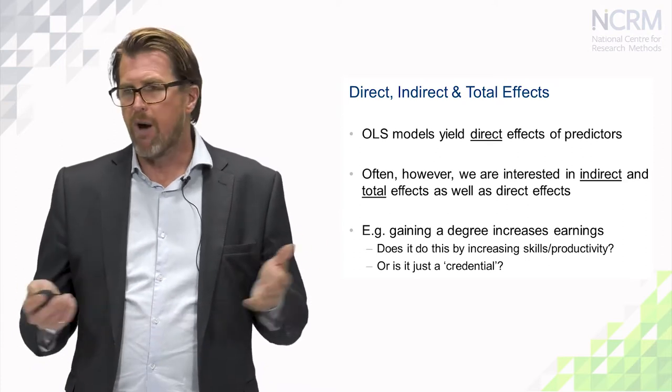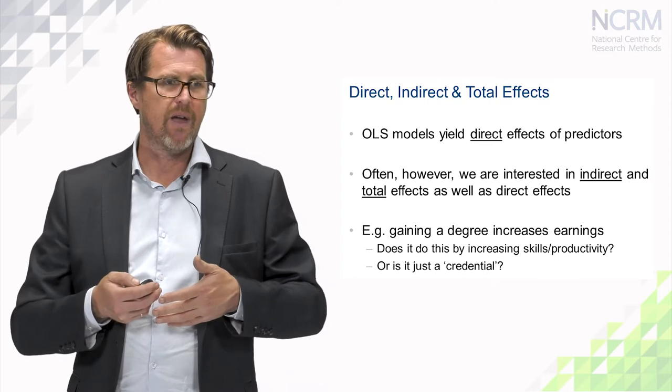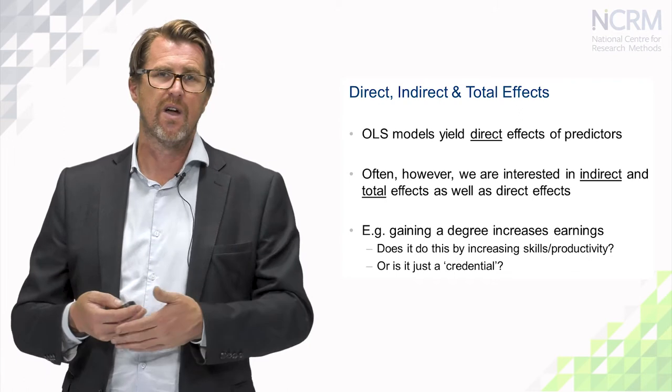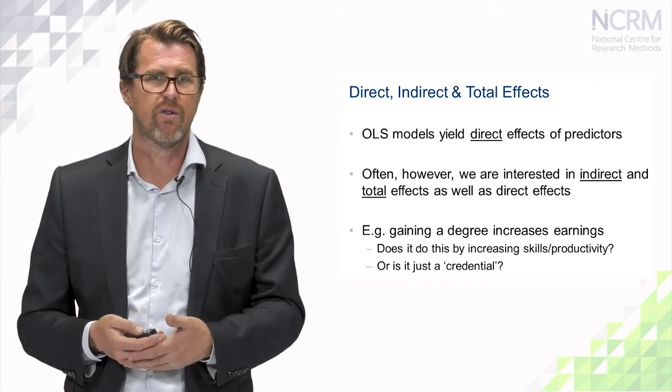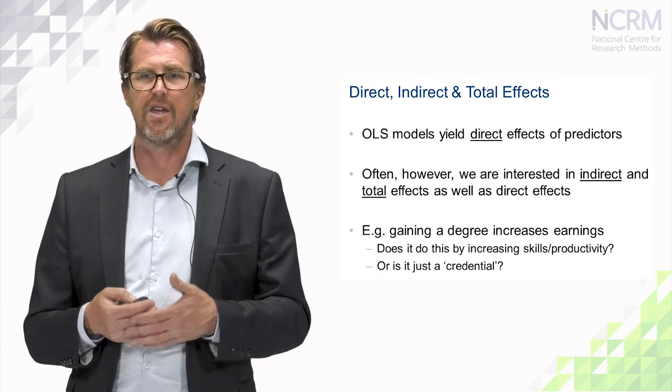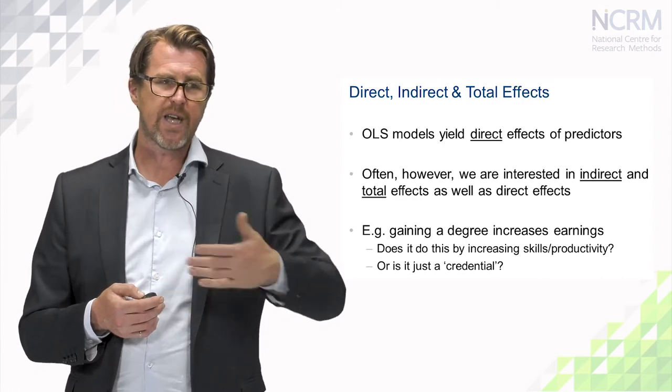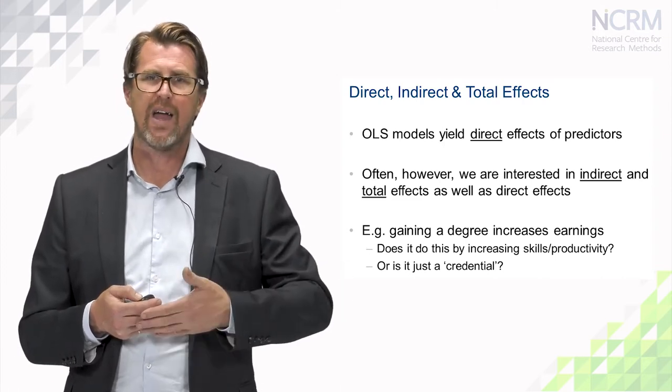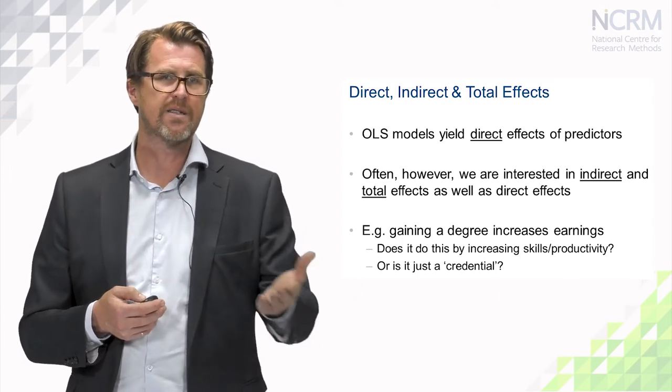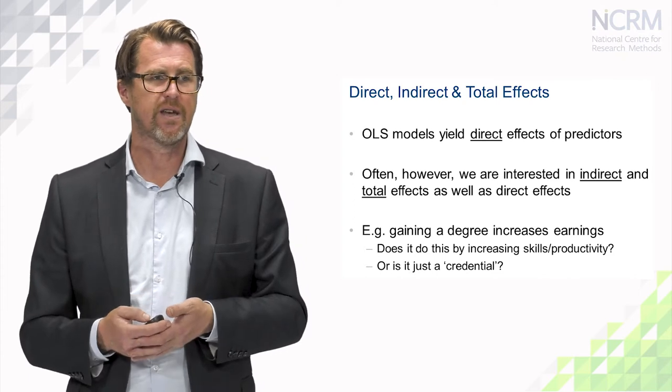We might, for example, conclude that gaining a degree at university increases your earnings, it might have a causal effect on your earnings in later life, and that's a useful and interesting conclusion to be able to draw. But there might be secondary questions about how that actually happens, what is the mechanism that underlies the earnings return to gaining a degree.